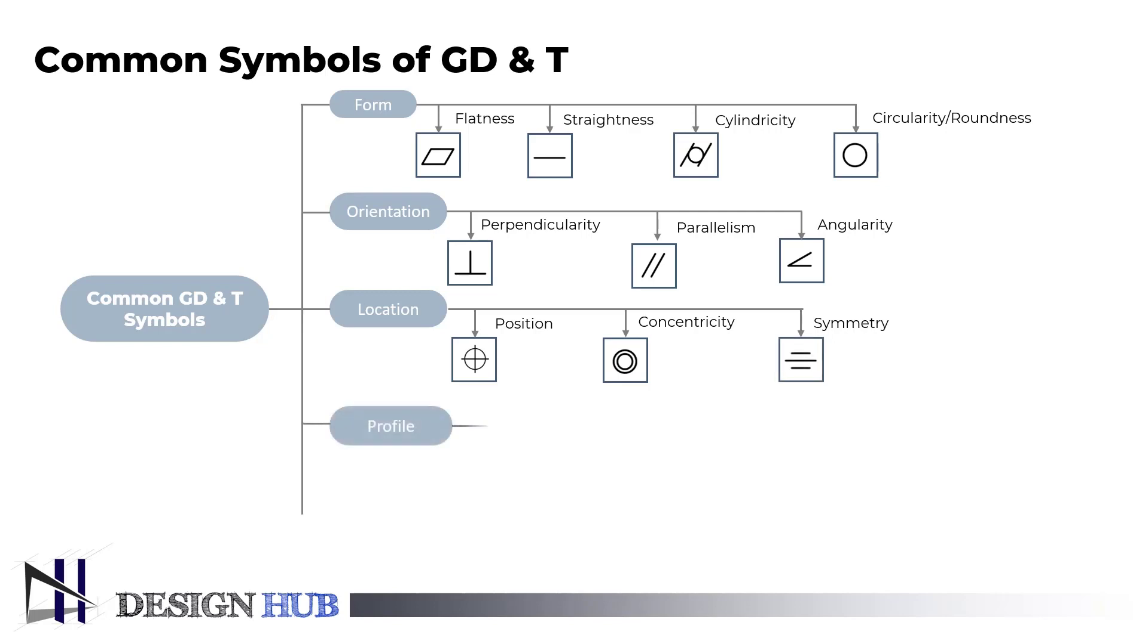In profile type tolerance, we have surface profile and line profile. A surface's profile refers to the three-dimensional tolerance zone surrounding it, which is typically an intricate curve or shape. The entire surface, where the radius must fall within the tolerance range, is called out on a curved surface, such as a fillet on a welded part. Every point along the surface is controlled by the profile within a tolerance range.